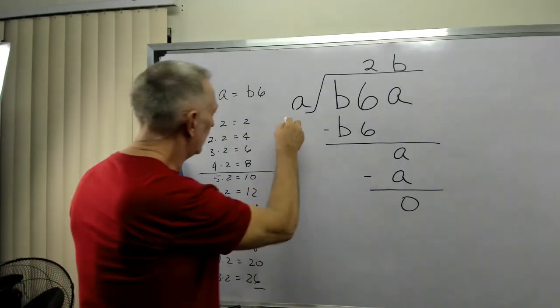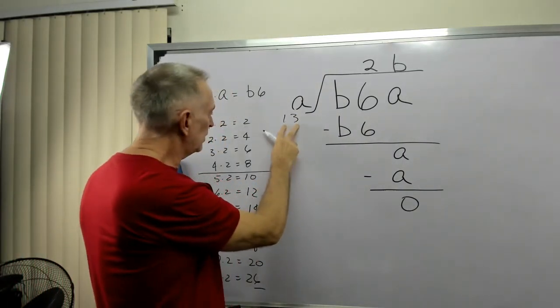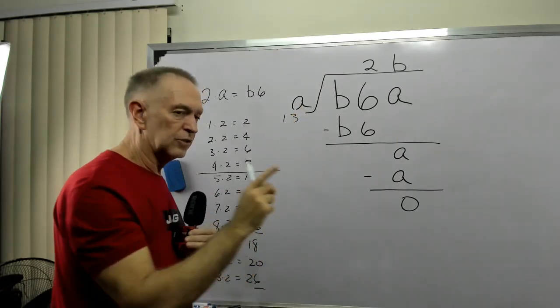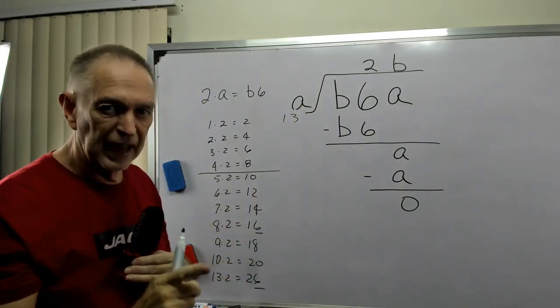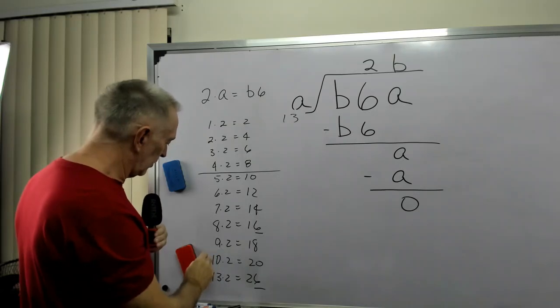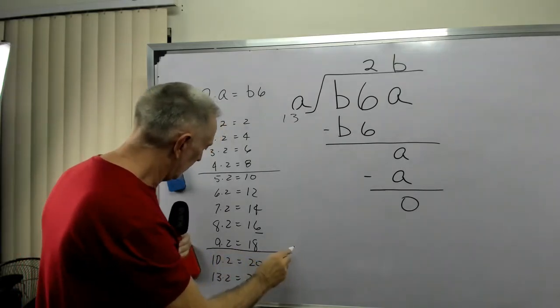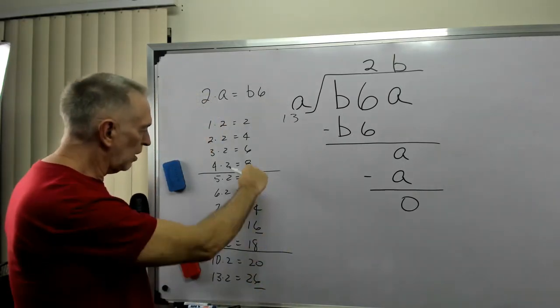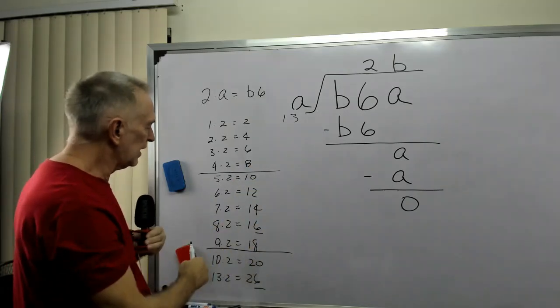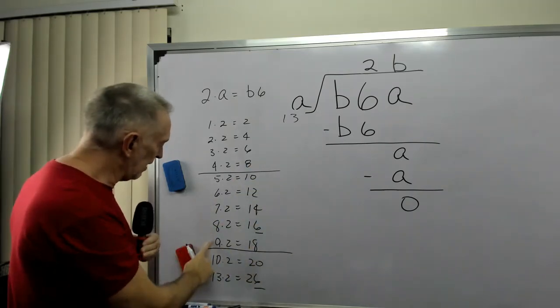13, that's two digits. A is a single digit. A cannot be greater than 9. So that caps off the numbers that I can use. It's between 5 and 9.